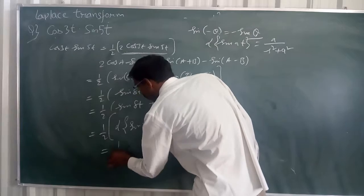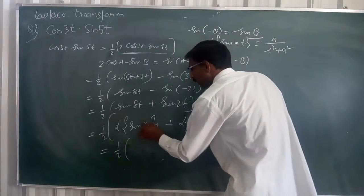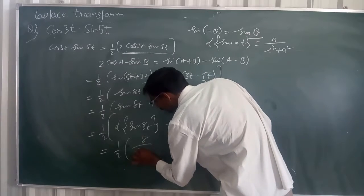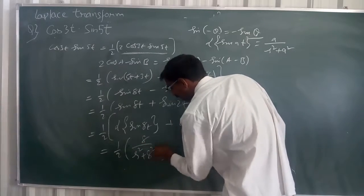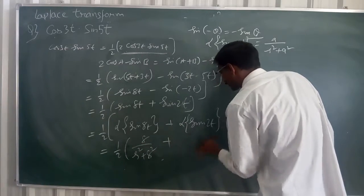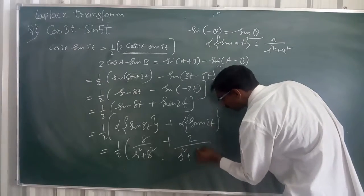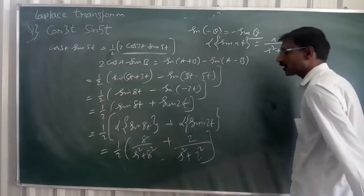So this is equal to 1 by 2 into, we can write 8 by s square plus 64, plus here this is 2 by s square plus 4. Is it clear or not?